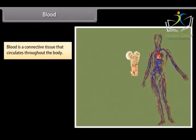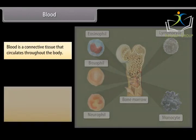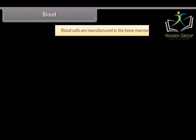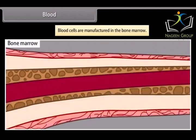Blood: Blood is a connective tissue that circulates throughout the body. It is made up of a fluid medium called plasma in which float three types of blood cells called red blood cells, white blood cells and blood platelets. Blood cells are manufactured in the bone marrow.